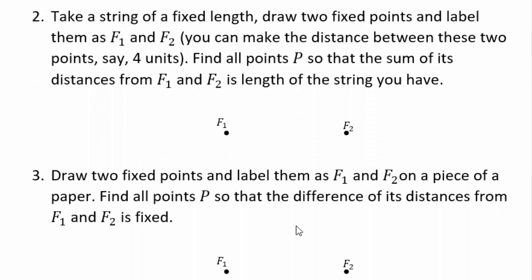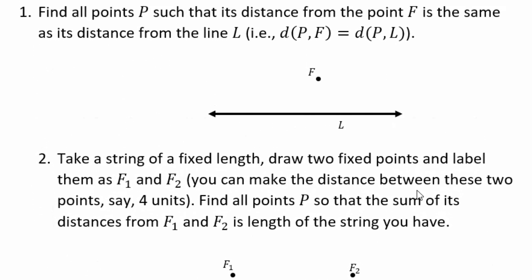Then take two fixed points and find all points so that the sum of their distances from F1 and F2 is exactly the same constant. Think of it as taking a string, fixing one end on F1 and one end on F2, stretching it all the way out, and tracing all the points that have exactly the same sum of distances. Then instead of the sum, find all points where the difference of those distances from F1 and F2 is fixed. Pause the video, play with it, and then come back.